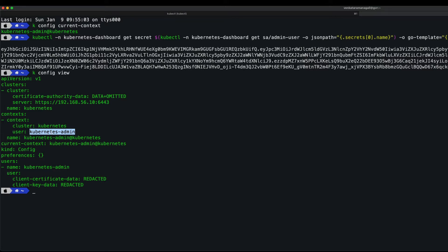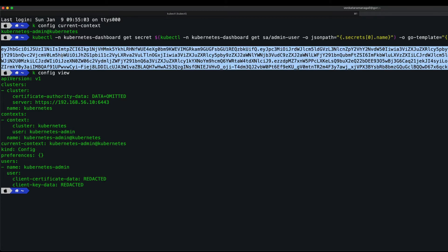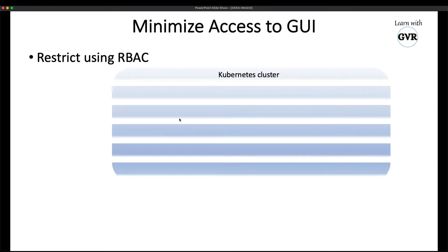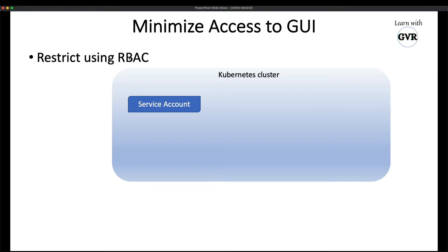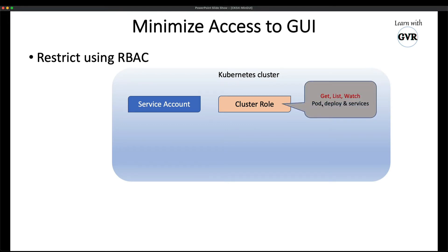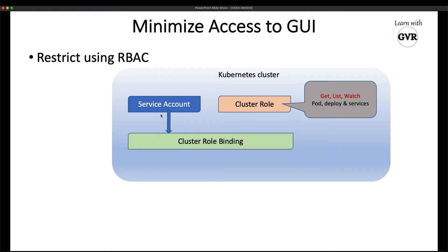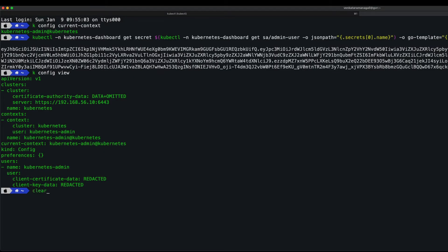If everybody has admin permissions, they can read secrets and access anything. The RBAC solution: first create a service account, then create a cluster role with only get, list, and watch permissions on pods, deployments, and services. Then create a cluster role binding at the cluster level, mapping the cluster role to the service account. After this, the service account is used as a bearer token so whoever connects has very restricted permissions.